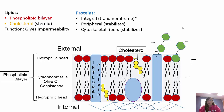We have proteins dispersed between the phospholipids - those are in blue. We have two types: integral and peripheral proteins. Integral proteins are also called transmembrane proteins because they span across the whole membrane from top to bottom. Peripheral proteins are usually on the underside - the internal side of the plasma membrane - and don't go all the way through, only partially. Cytoskeletal fibers on the bottom help stabilize the membrane and keep its structure.